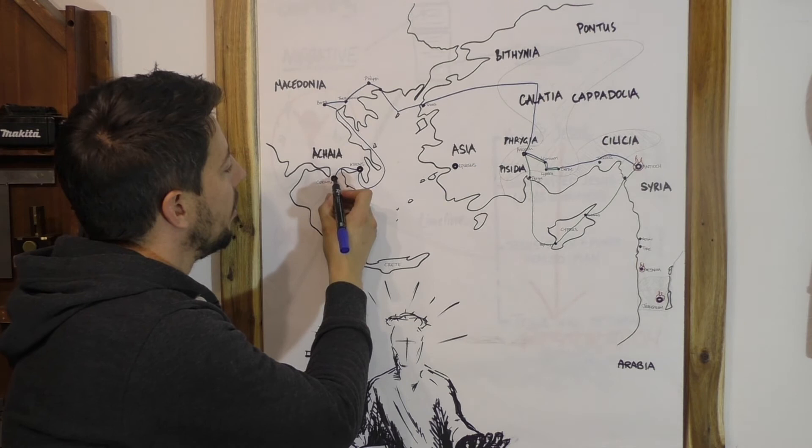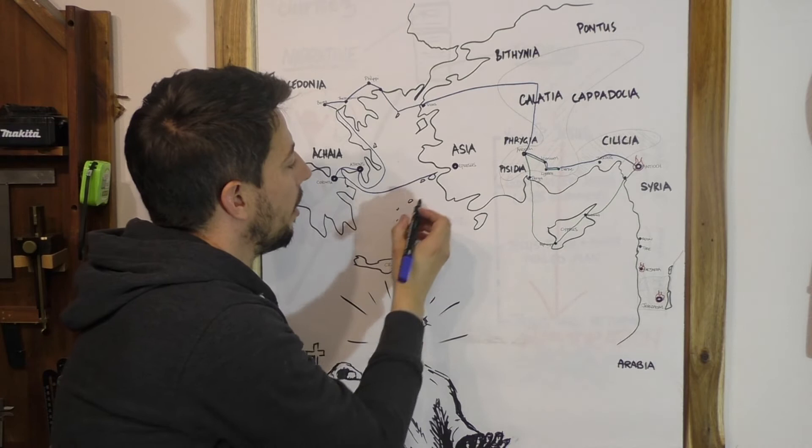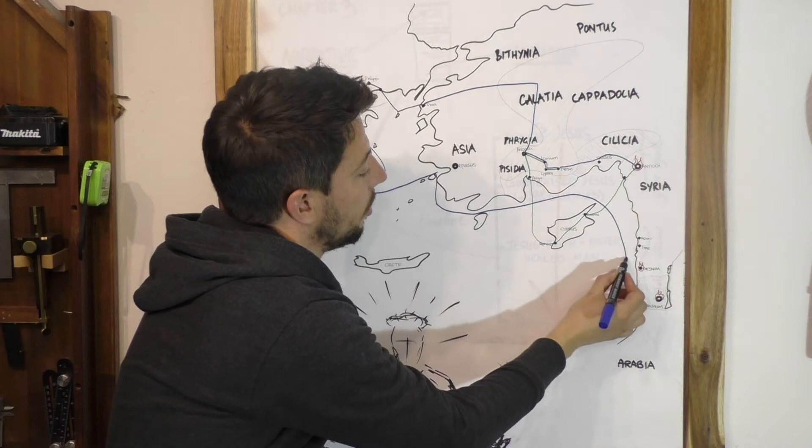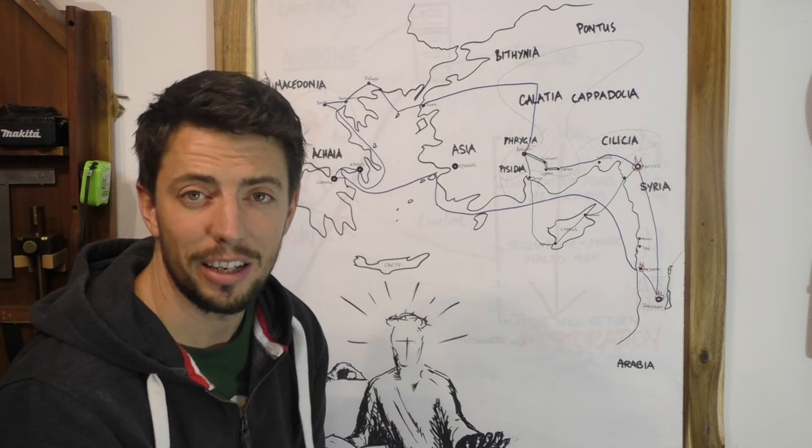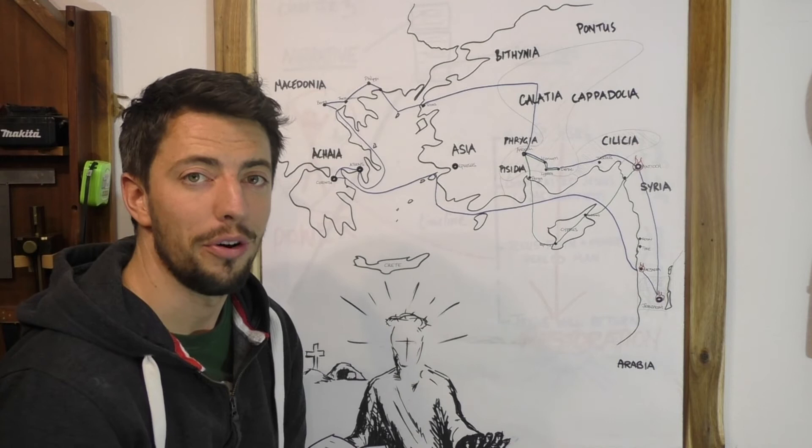That ends more or less the second journey, because from there he aims for home. He takes a brief stop near Ephesus without doing any real ministry there, probably along the coast. They head down to Caesarea, he goes into Jerusalem for some offerings and to strengthen the churches there, and then back home. So that was the second journey, we covered this other province of Macedonia and Achaea. Probably took about three years this journey.